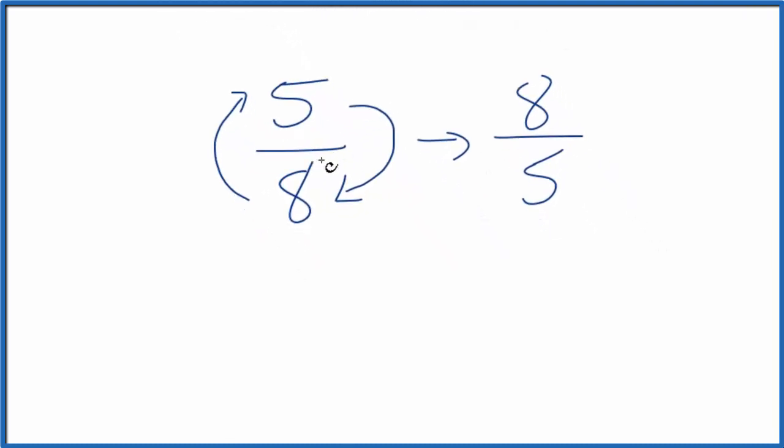So the reciprocal for 5 eighths is 8 fifths. And we can check our work. We can take the original fraction, 5 eighths, and multiply it by its reciprocal, 8 fifths. If we did it right, we should end up with 1.